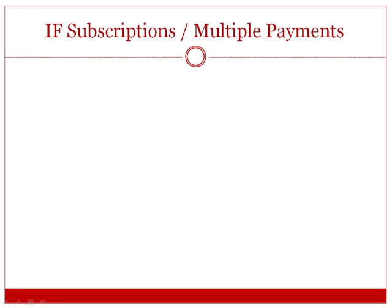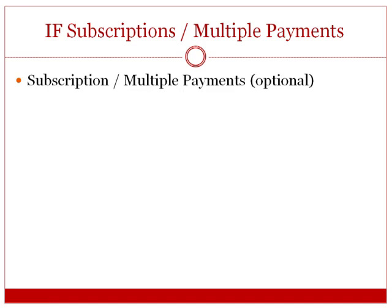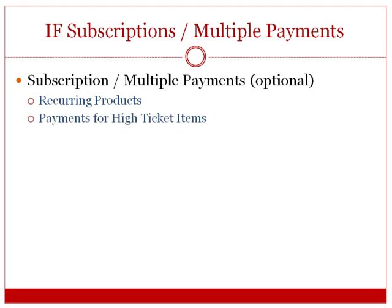If your product is a subscription, listen to this; otherwise you can fast forward to the next slide. If you're charging $17 a month, or you have a high-ticket product at $497 or $1,000 that you can break into payments — for example, someone can't pay $1,000 upfront but could afford $100 or $200 a month — that would be an option. This applies to recurring products and payments for high-ticket or low-ticket items if your audience is unable to pay a certain amount upfront.